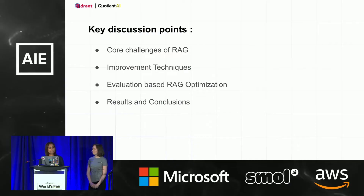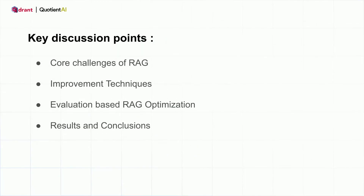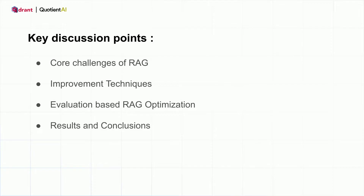We will be talking about navigating RAG optimization with an evaluation-driven compass. The track is about RAG, so let's extend what we already know. In this talk today, we will be discussing some of the key essential topics for anyone interested in building or productionizing the most popular implementation of generative AI — that is RAG, retrieval augmented generation.